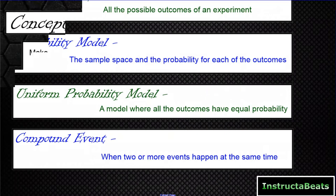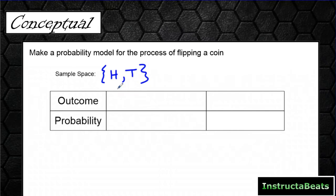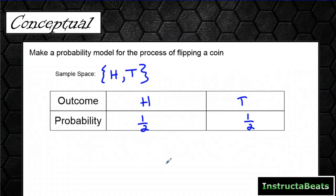Let's start with our probability model — something you've been doing without knowing it. If we wanted a probability model for flipping a coin, we'd start with our sample space: all the possible outcomes, which are heads or tails. Then our probability model shows those outcomes with their probabilities — each is 1/2. We label this as a simple event because we are flipping the coin once.